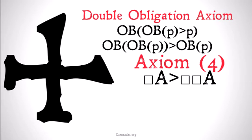Note some similarities between this axiom and axiom 4 from S4, the alethic modal logic. For deontic logic, the double obligation axiom takes two obligations and simplifies it down to one — so if you have a long string of obligations, you simplify it down to one. Whereas axiom 4 in S4 takes a single necessity and doubles it: it says necessary A implies necessary that necessary that A. There are similarities here.